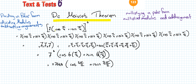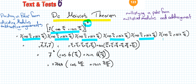So we see a scenario here where we have 7(cos π/4 + i sin π/4) to the power of 6. So what does the power of 6 mean? It means multiplied by itself 1, 2, 3, 4, 5, and 6 times.